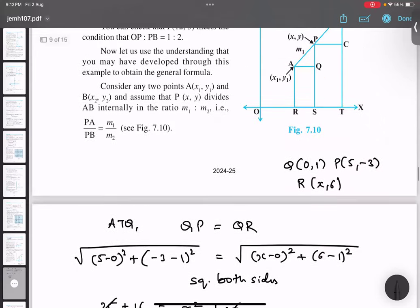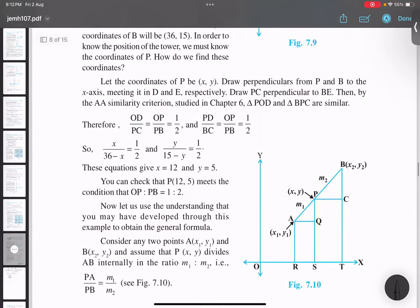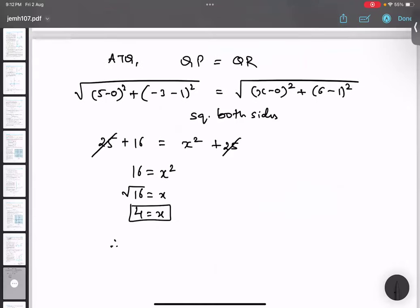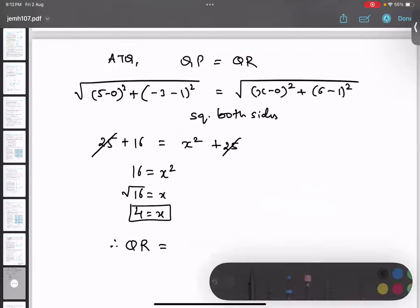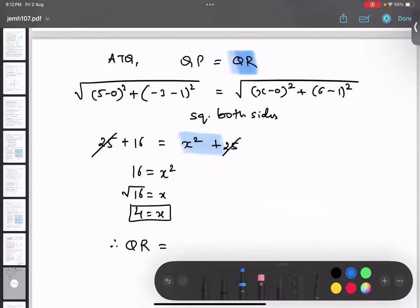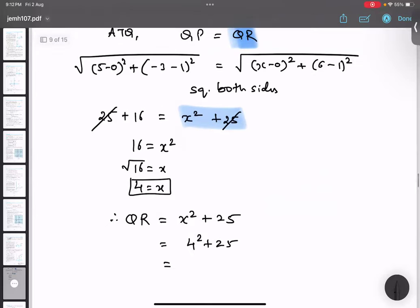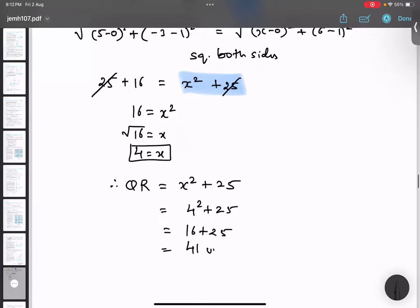Question is find the value of X and also find the value of distance of QR and PR. So QR. QR was what? QR was this side. So this was the distance. X square plus 25. So I will be doing directly. 4 square plus 25, which is 16 plus 25, 41. 41 unit. QR distance is 41 units.